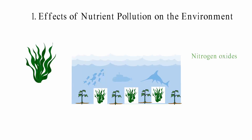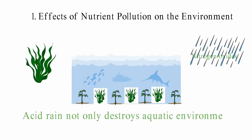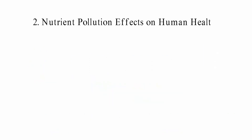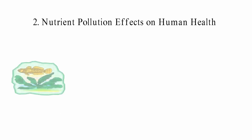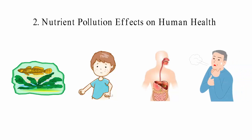Nitrogen oxides in the air can mix with rain to make acid rain, which not only destroys aquatic environments but also pollutes the soil. Nutrient-polluted water can cause a wide range of skin diseases. People who come into contact with harmful algal blooms (HABs) may get rashes on their skin. Eutrophication of water sources can lead to the spread of digestive tract diseases if someone drinks the water. High levels of nitrogen in the air can also cause serious respiratory problems for both children and adults.